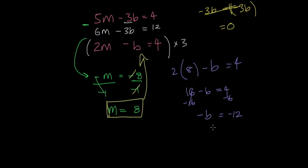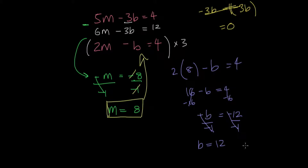And in order to get b by itself, I'm going to divide both sides by negative 1. And that leaves me with b equals 12. So the value we got for m is 8 and for b is 12.